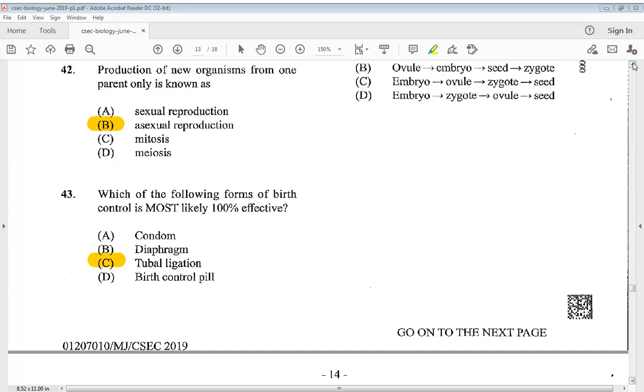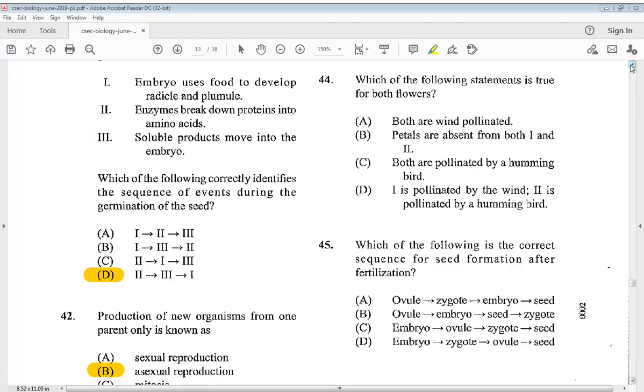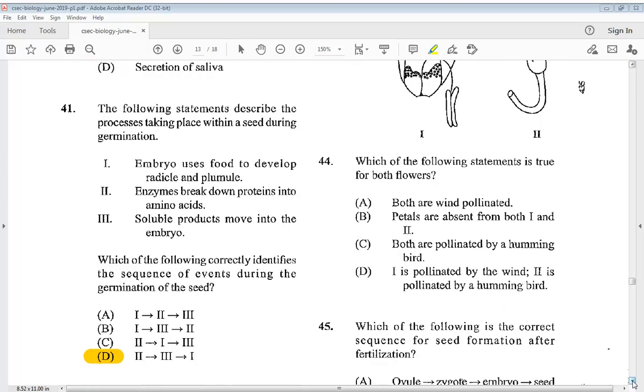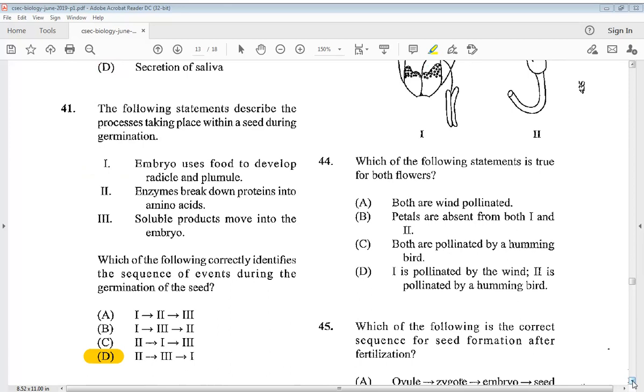Number 44. Item 44 refers to the following diagrams of flowers from two different types of plants. Which of the following statements is true for both flowers? A both are wind pollinated, B petals are absent from both one and two, C both are pollinated by a hummingbird, D one is pollinated by the wind, two is pollinated by a hummingbird. So the answer is D.